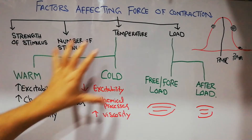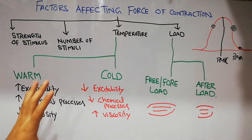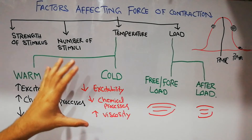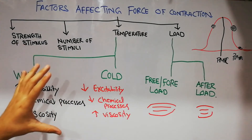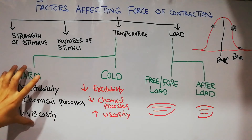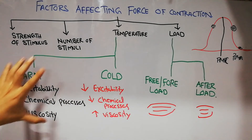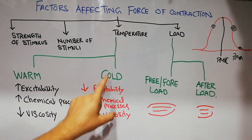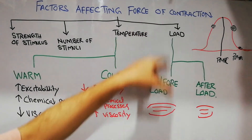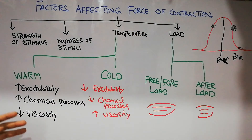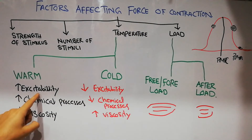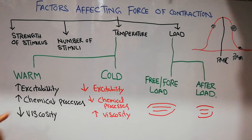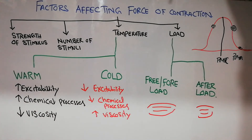So the effect of temperature on the force of contraction is very simple. Warm temperature increases the force of contraction and cold temperature decreases the force of contraction. The basic factors involved are excitability, the chemical processes occurring inside the muscle, and viscosity.